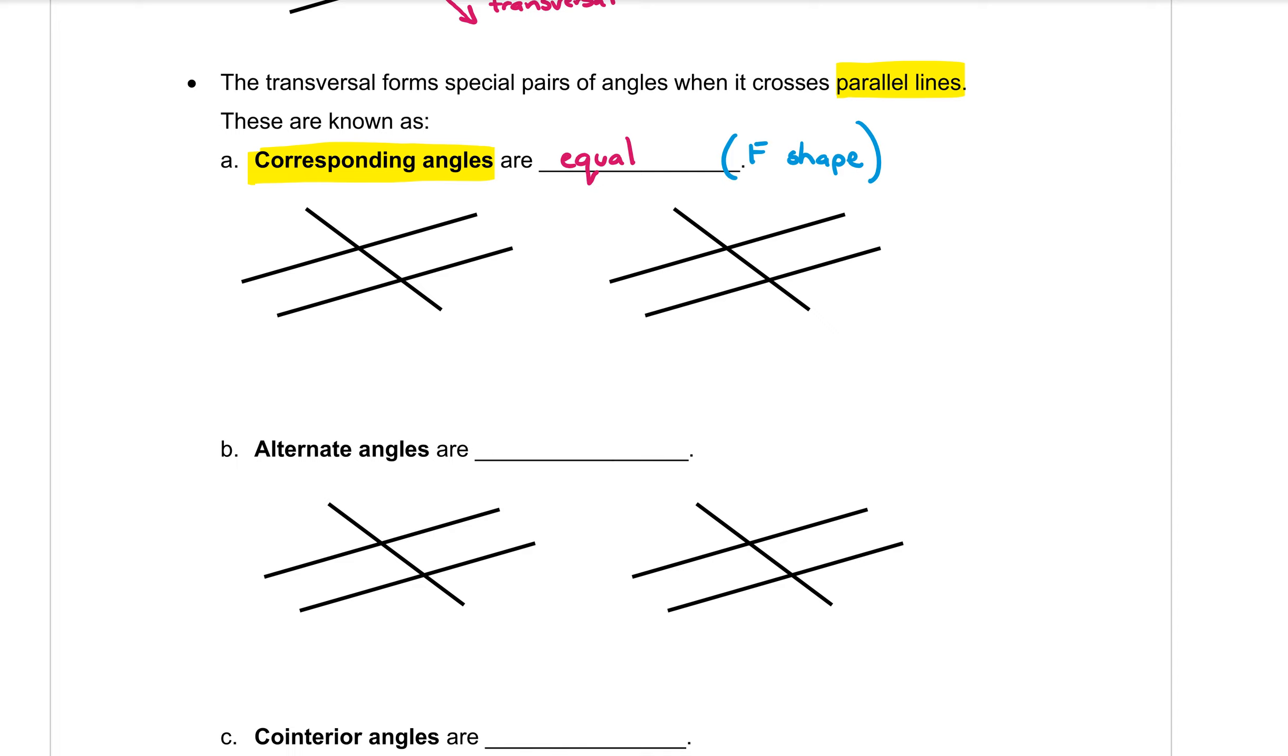If I were to look at this angle here and this angle here, if I was to draw the arms on there and join them together, you can see that that makes an F shape. So those two angles are corresponding angles and they will be equal.